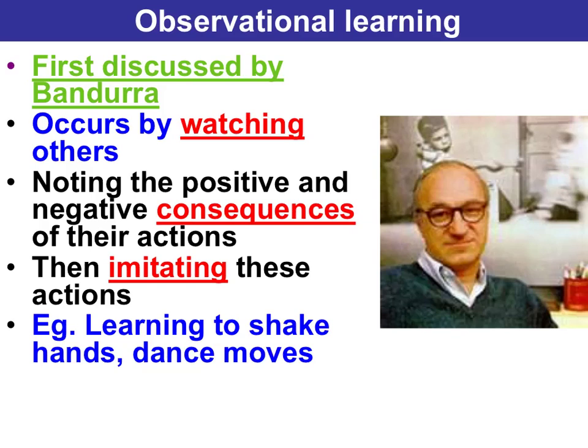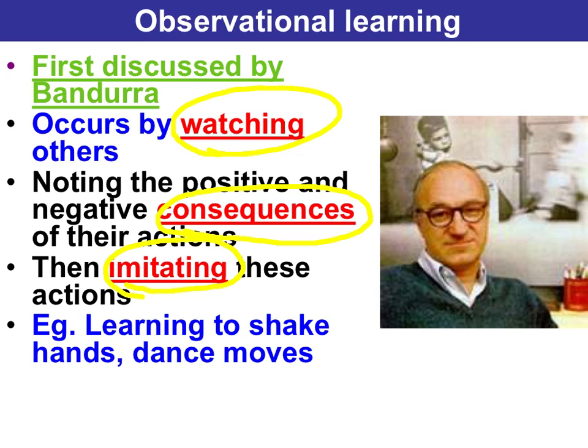Three key aspects of observational learning as a theory: it occurs by watching others and noting the consequences. If others are positively reinforced, we're more likely to repeat or imitate that behaviour. If they're punished, we're less likely to imitate that behaviour.